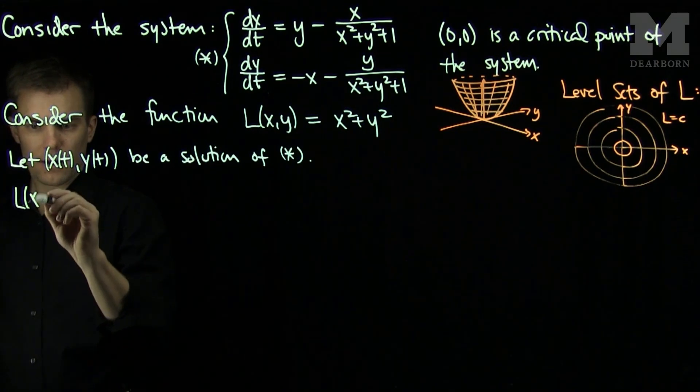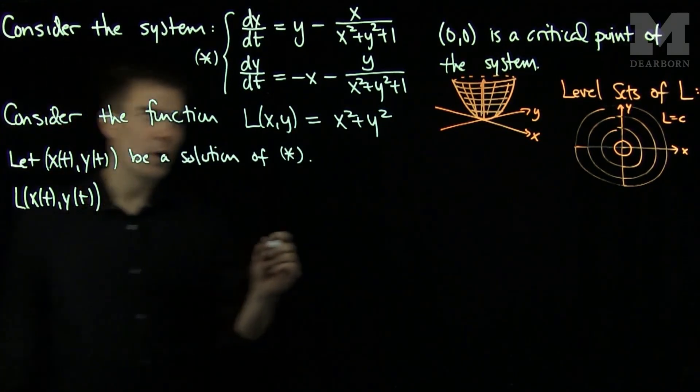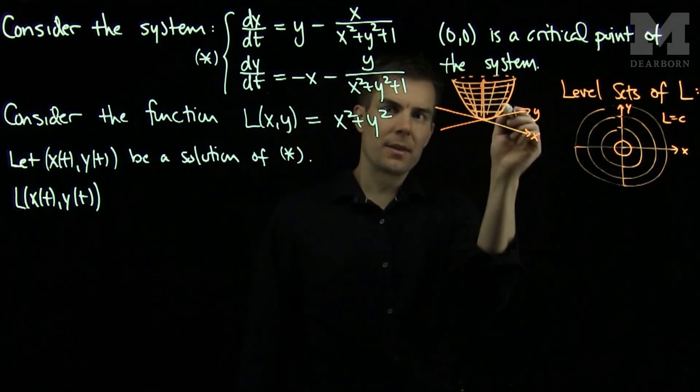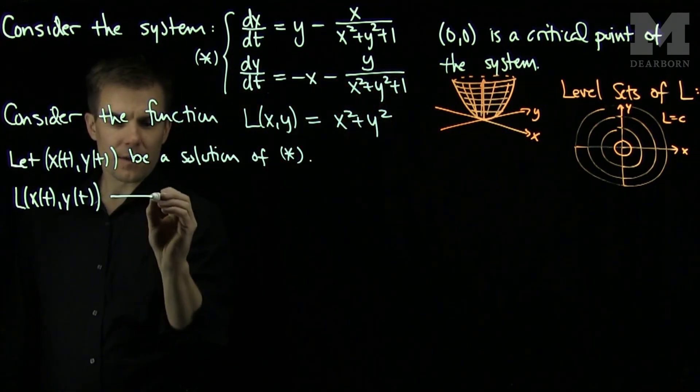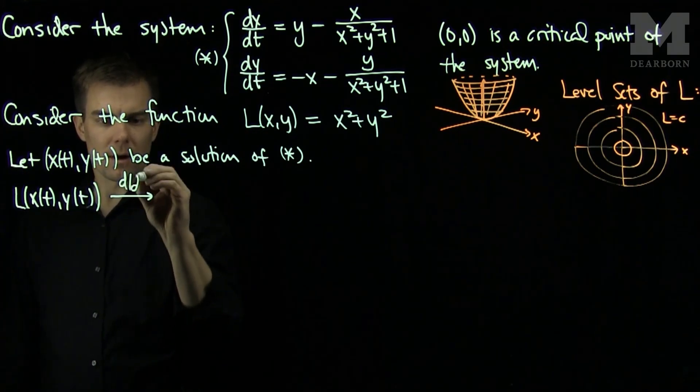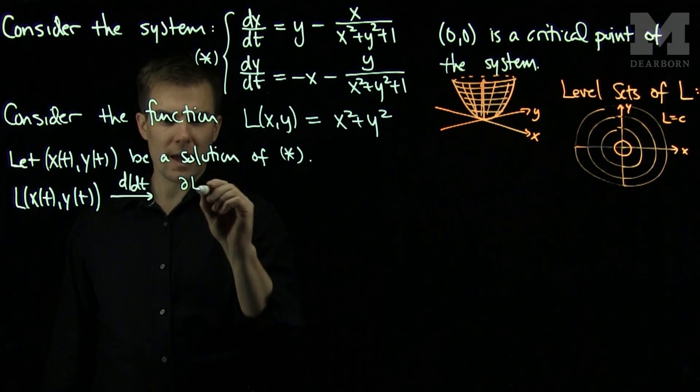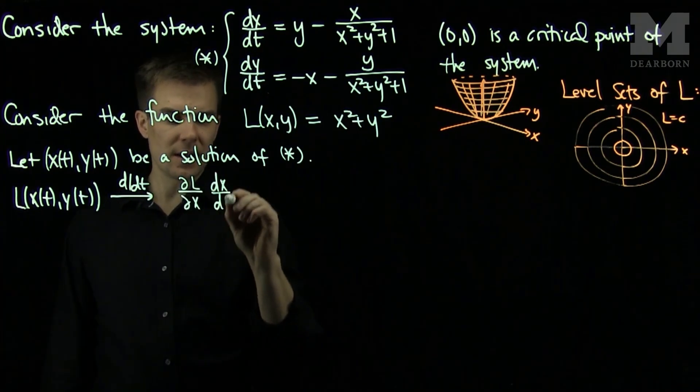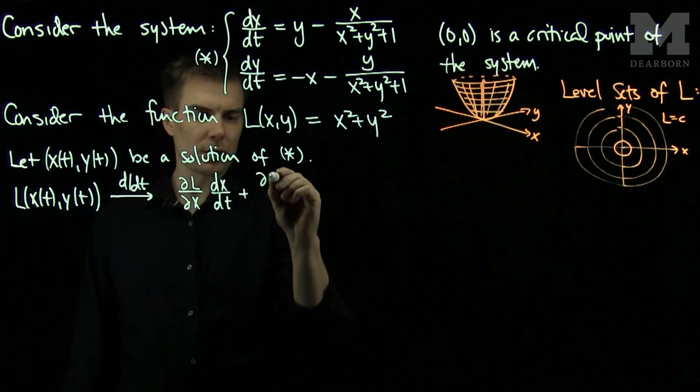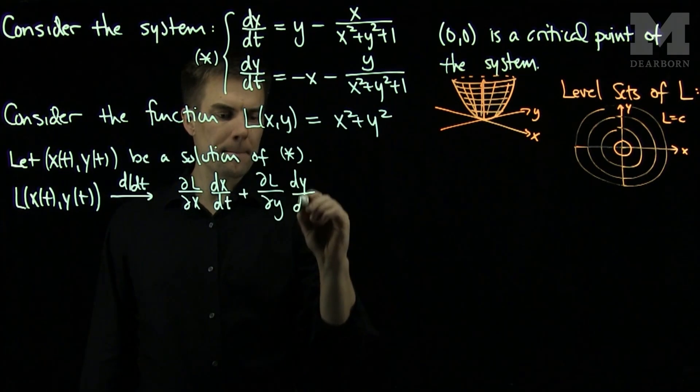L(x(t), y(t)) will be points on this paraboloid. If I take the derivative of this, I will have ∂L/∂x dx/dt + ∂L/∂y dy/dt by the chain rule.